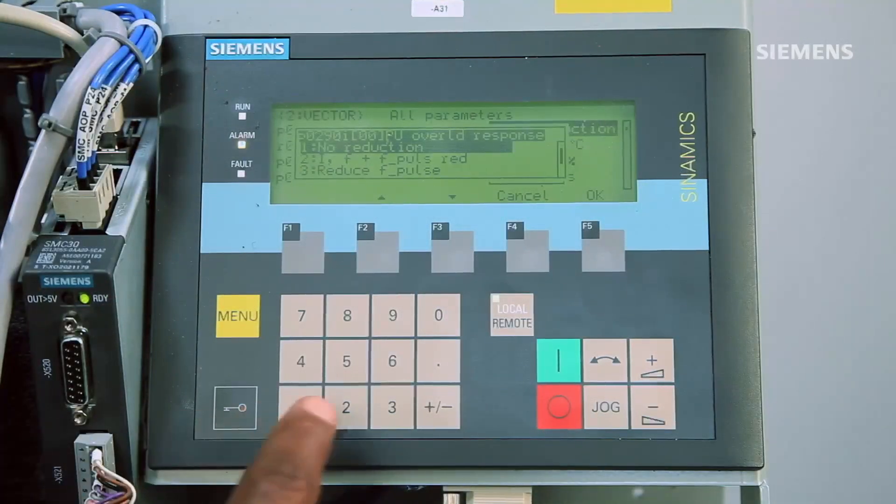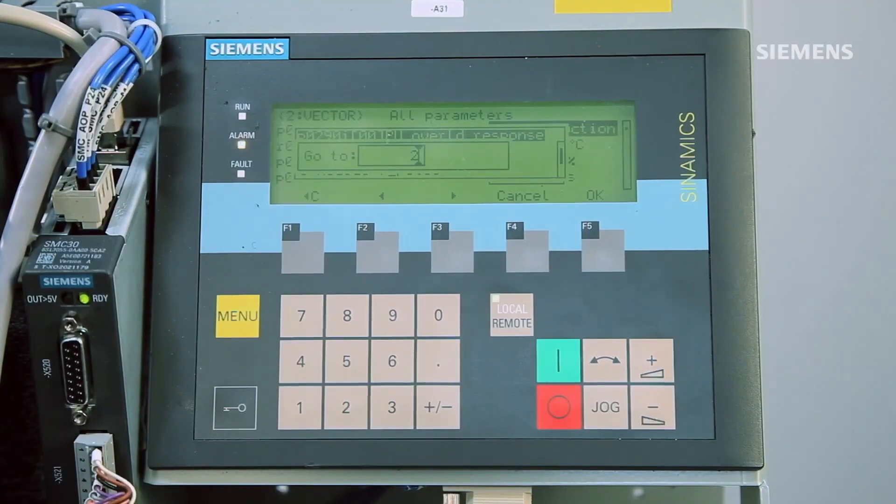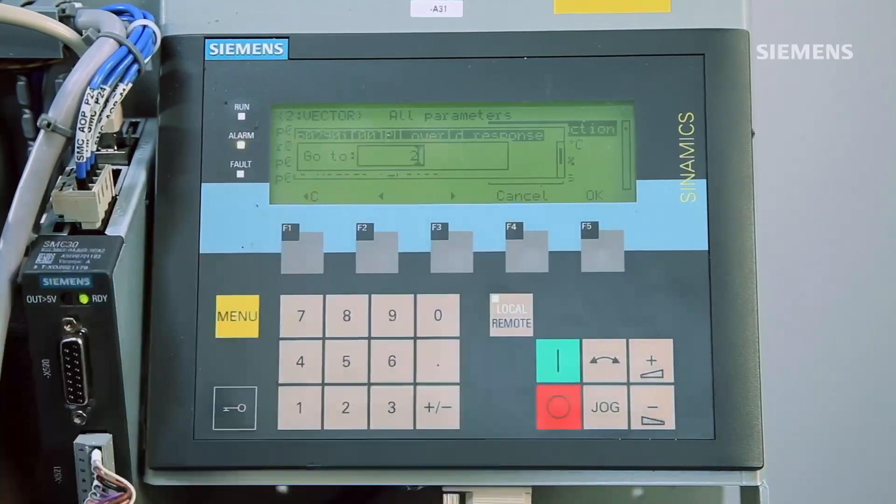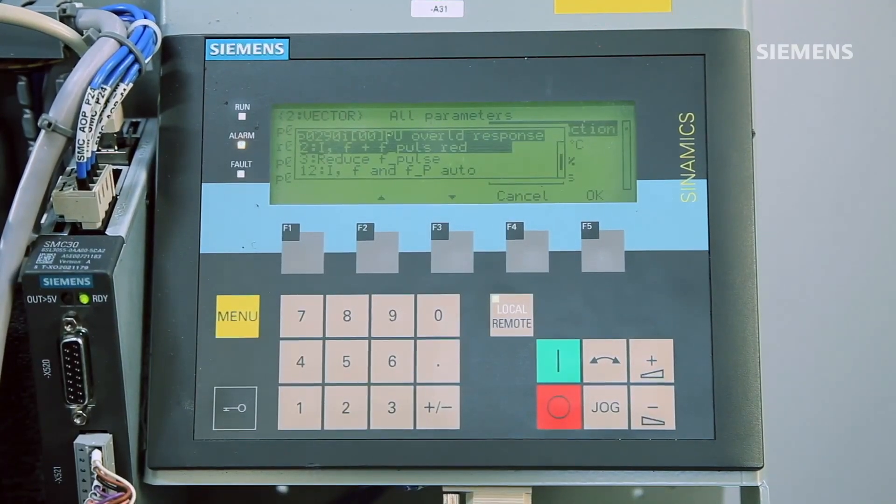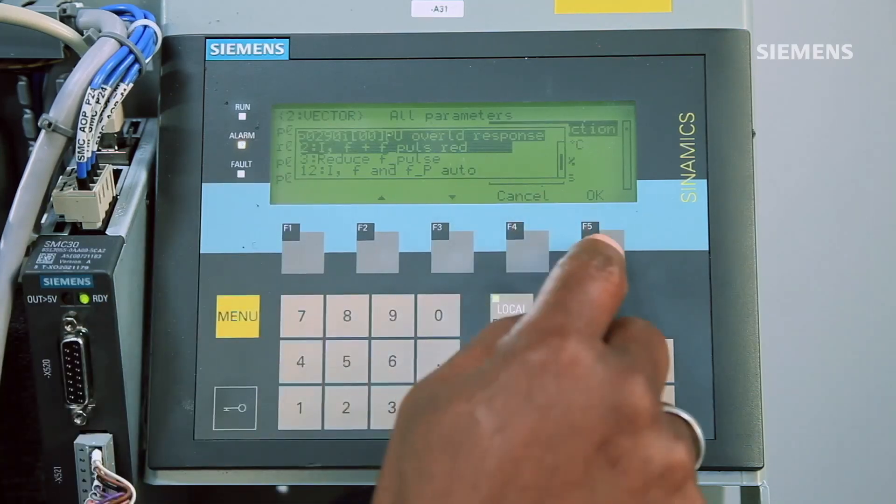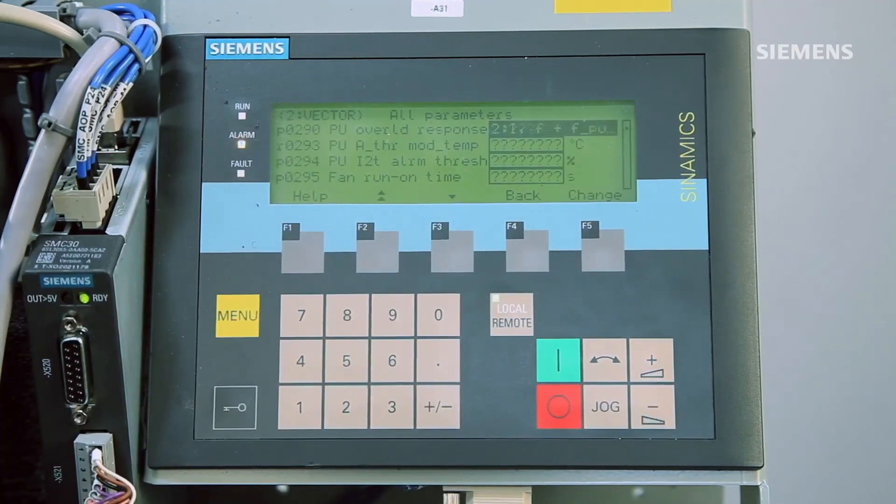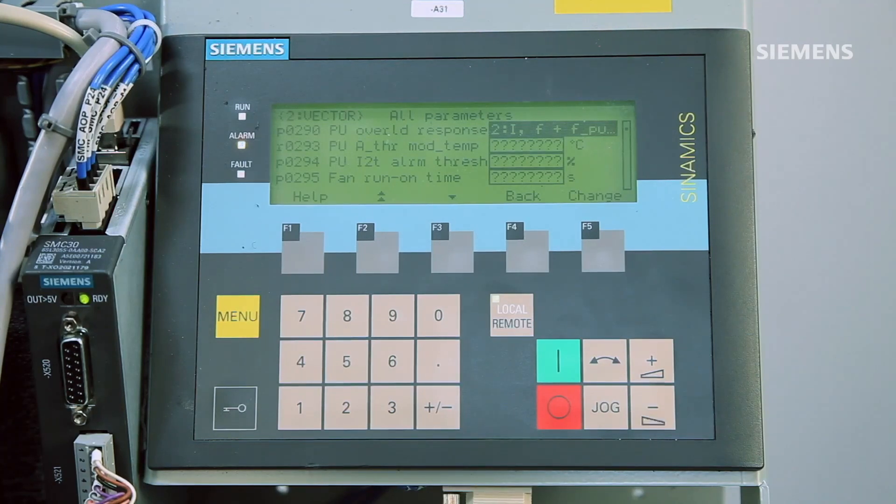If we set parameter 290 to 2, the drive will do a combination of lowering either output current or output frequency and lowering pulse frequency. So setting parameter 290 to 2 will be a combination of both 0 and 3.